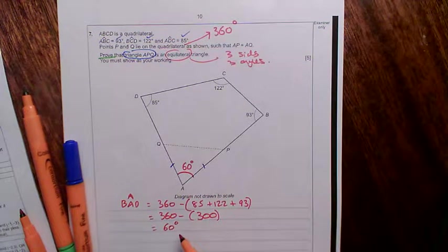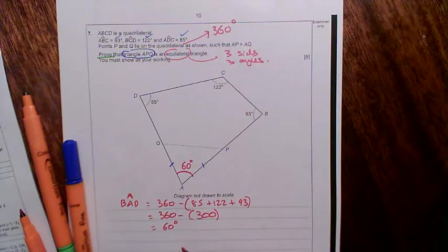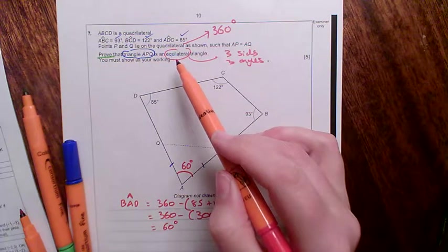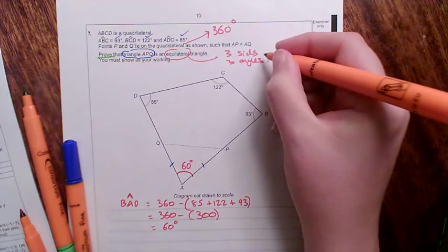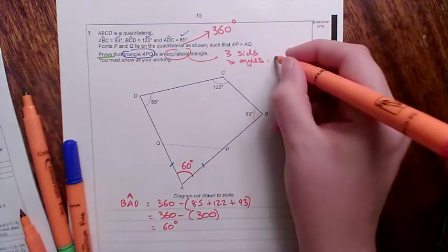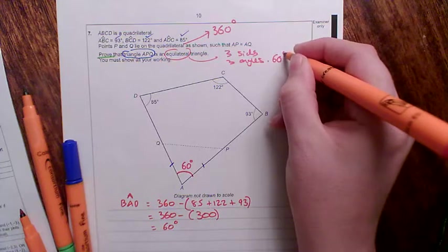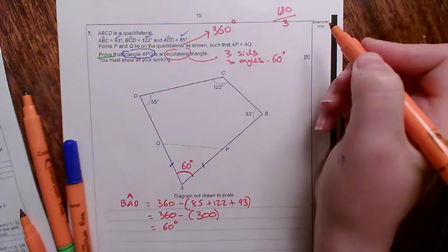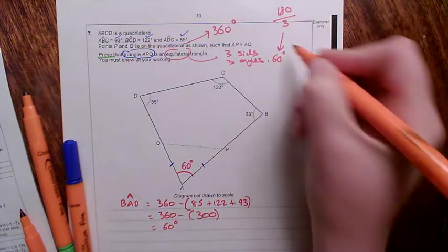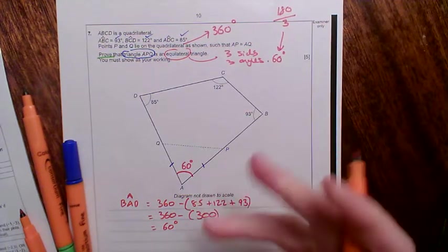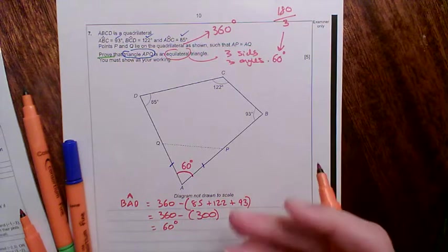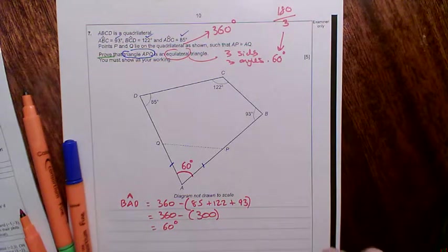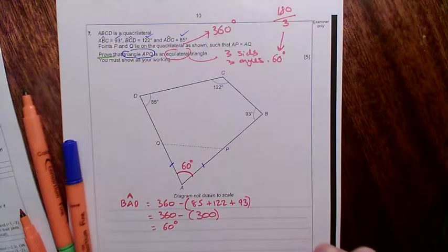Now, already alarm bells are starting to ring for me because, remember, ultimately the question wants me to prove that triangle APQ is an equilateral triangle. Now, in an equilateral triangle, you said the three sides were equal, but also the three angles are equal. And of course, a triangle adds up to 180 degrees, and 180 split between three equal angles is going to give you 60 degrees. These are just facts that you need to know, especially as you sit an intermediate paper. So 60 degrees is the angle of an equilateral triangle.